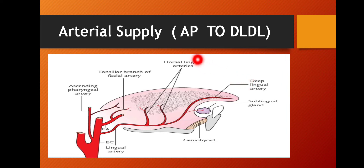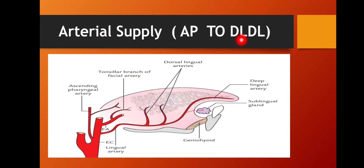How to remember: AP — A means ascending pharyngeal. Next, TO — TO means tonsillar branch of facial artery. Then DLDL — first DL means dorsal lingual, and the second DL means deep lingual. In this way you can remember all the arteries supplying the tongue.